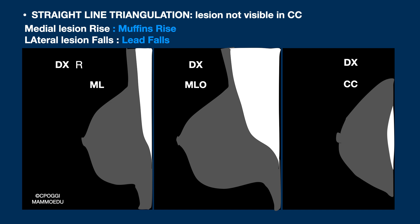This method was once called the straight line triangulation. Let us consider the case of the central lesion on MLO, and that we see, as in the example I've just shown you, in the superior quadrant in the lateral projection. Drawing a line — drawing the two findings up to the CC — considering that in the CC that finding cannot be seen, we can be certain that it must be looked for in the inner quadrant.